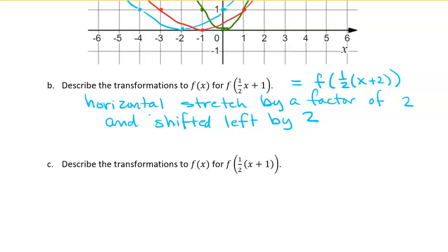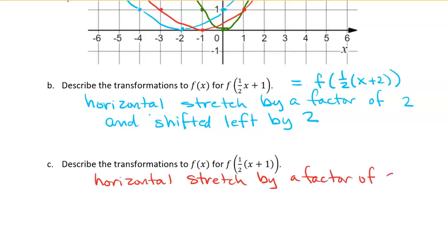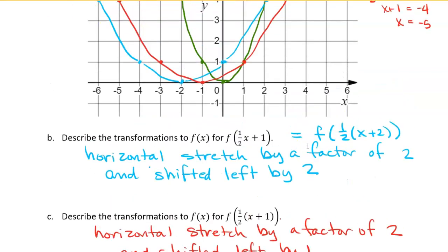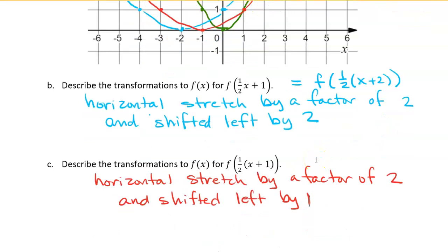Let's describe the transformations for this other one — I'll use red since I drew it in red. This one is a horizontal stretch by a factor of 2, and it is shifted to the left by 1. So the takeaway is that the order of these shifts matters, and if we have a coefficient on x with multiple shifts to the input, we need to factor that coefficient out.